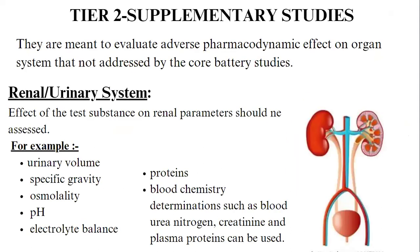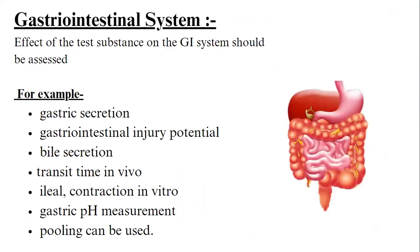Supplementary studies are meant to evaluate advanced pharmacodynamic effects on organ systems not addressed by core battery studies. First, the renal/urinary system — effects on renal parameters should be assessed, for example urine volume, specific gravity, osmolality, pH, electrolyte balance, protein, and blood chemistry determinations such as blood urea nitrogen, creatinine, and plasma protein. Second, the gastrointestinal system — effects should be assessed including gastric secretion, GI injury potential, bile secretion, transit time in vivo, ileal contractility, gastric pH measurement, and pooling.